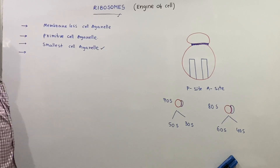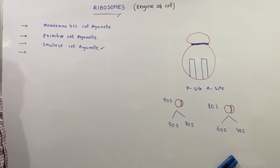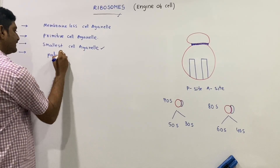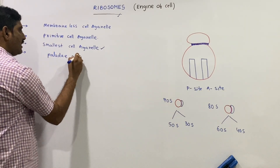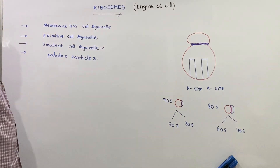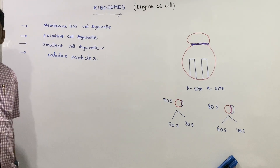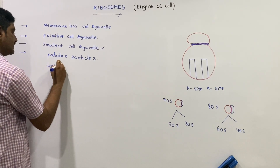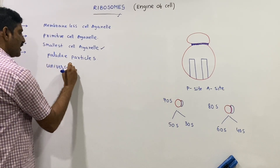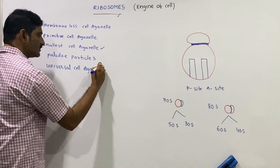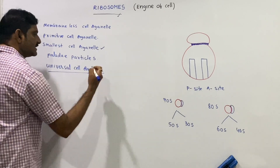Ribosomes were first observed by Palade in animal cells, so they are known as Palade particles. They are present in both prokaryotes and eukaryotes, so the ribosome is known as a universal organelle.